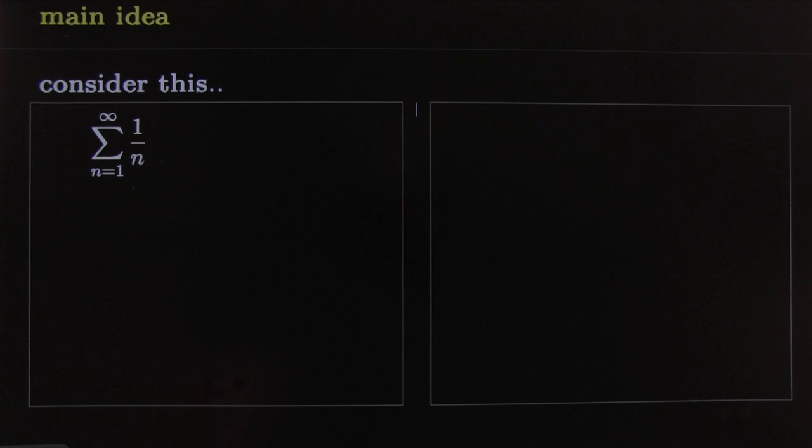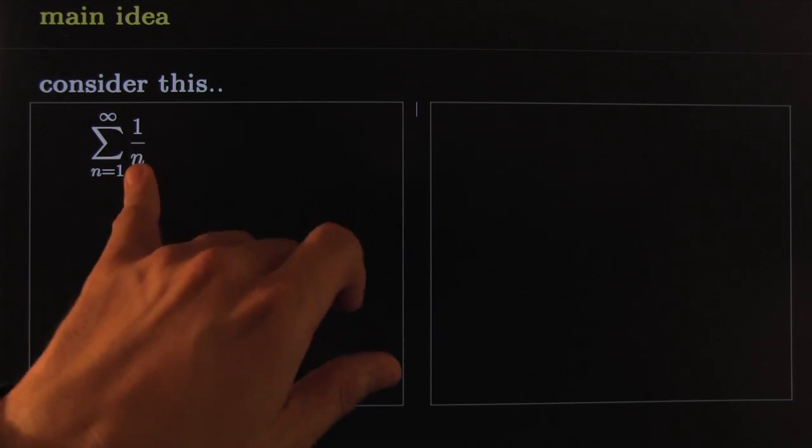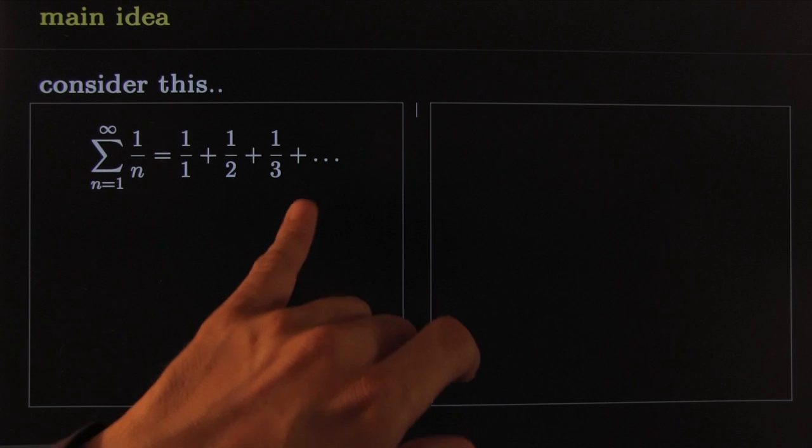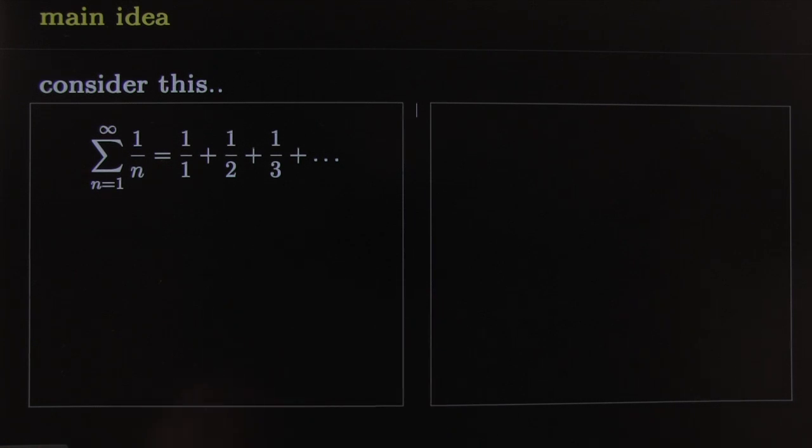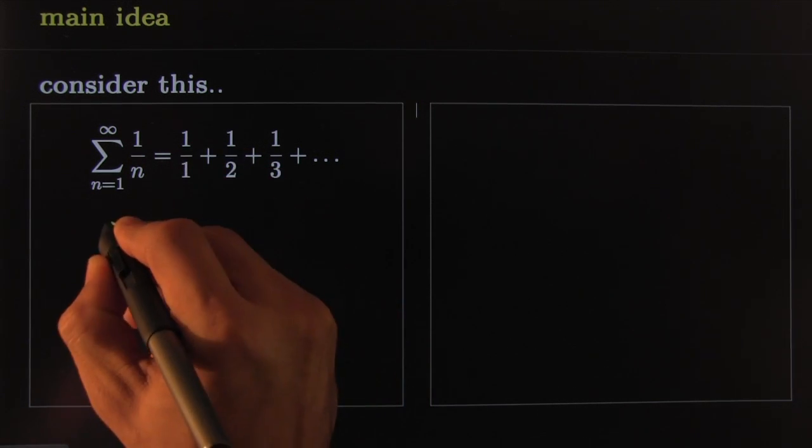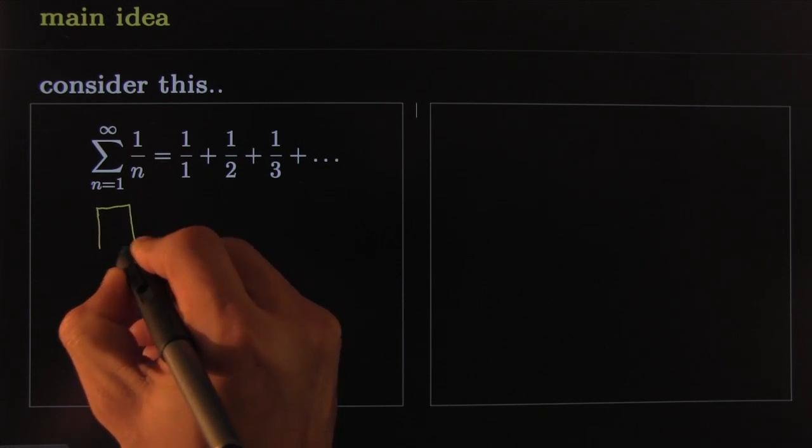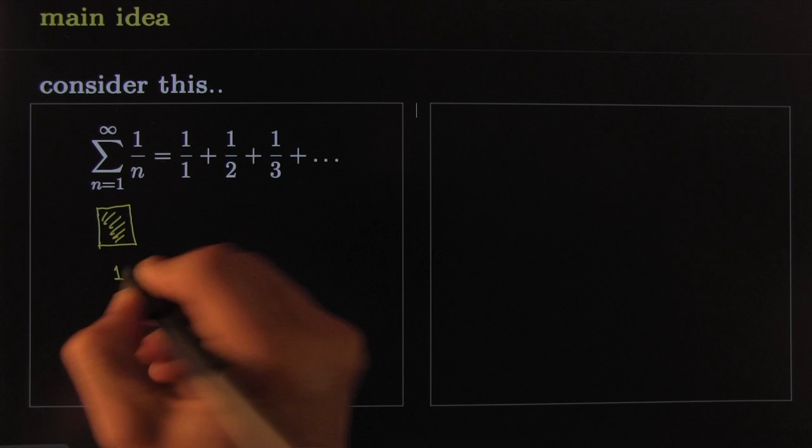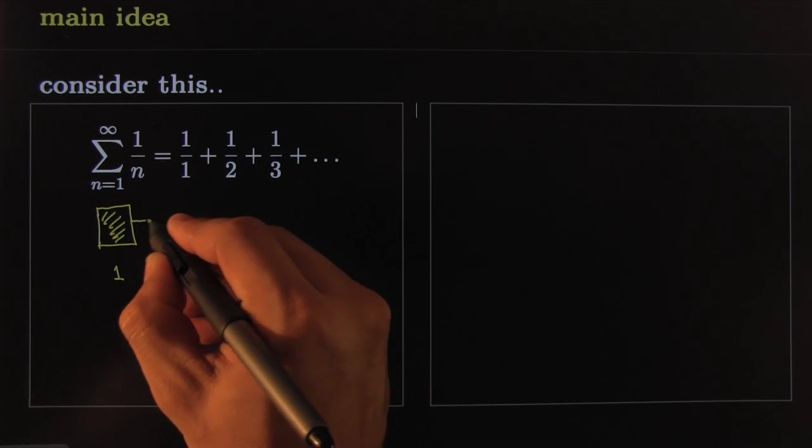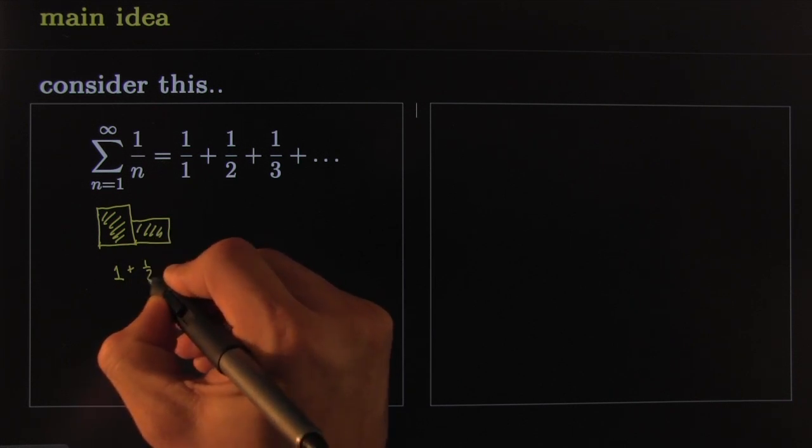If you start adding it up as n goes from 1 and goes all the way to infinity, when you plug in 1 you get 1 over 1, then you get 1 over 2, etc. Suppose now you were to make a picture of this sum. The picture may look something like this: this whole number is equal to 1, you could represent that with a block that is 1 by 1 area. This one you could represent with half a block, so half the total amount of area is a half.